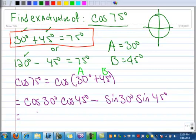Cosine of 30 degrees is square root of 3 over 2, times square root of 2 over 2, minus 1 half times square root of 2 over 2.